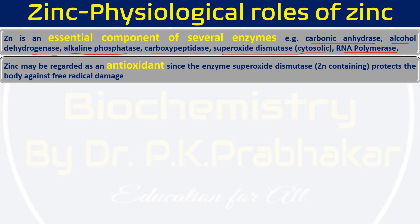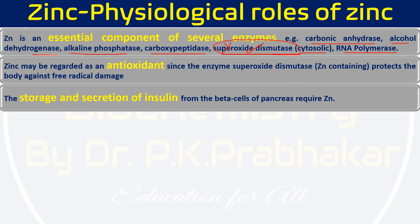A second function of zinc is that it is considered an antioxidant. Zinc is an important component of superoxide dismutase, which is one of the antioxidant enzymes. If you don't have zinc, this enzyme will not function. To perform this enzyme's functions we require zinc, and because of that, zinc is considered part of the antioxidant system of our body.